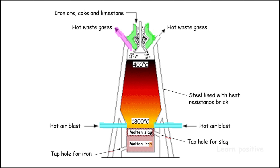After the heating process, the hot waste gas is exhausted from the top of the furnace, shown in pink in the diagram. Then we remove the molten slag first by opening the slag tap hole. After that, we open the iron tap hole and the molten metal is gathered in the crucible, which can then be used for casting purposes.